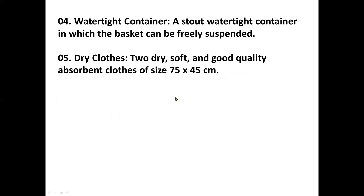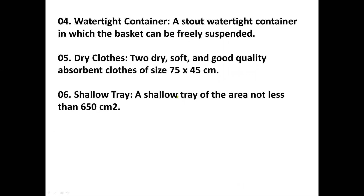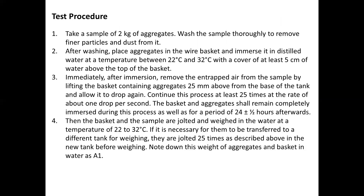Fourth is a watertight container — a stout watertight container in which the basket can be freely suspended. Fifth, dry clothes — two dry, good-quality absorbent cloths of size 75 by 45 centimeters. Sixth, a shallow tray of area less than 650 square centimeters. All of these are the apparatus used in the testing process.